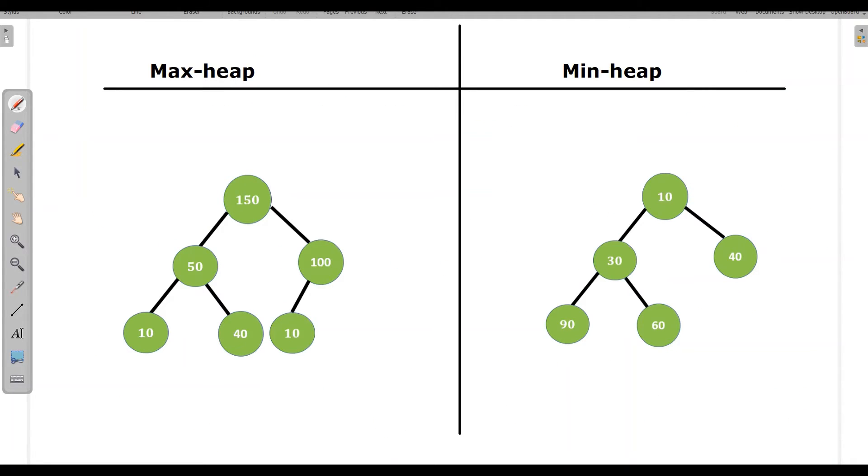Now let's see what is max heap and min heap. So max heap, it is a complete binary tree or almost binary tree in which root is maximum. When we see root in this entire tree, 150 is maximum among all the nodes. When we drop down, we see 50 here. It will check in its subtree whether 50 is greater than 10 and 40. Then thirdly coming to 100, it will check in its own subtree whether 100 is greater than 10. As it is following these conditions, it is a max heap.